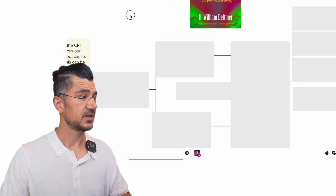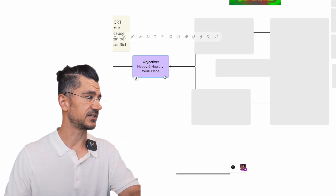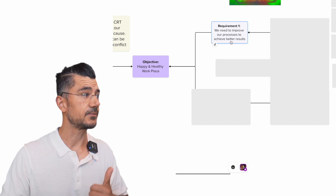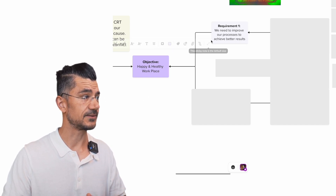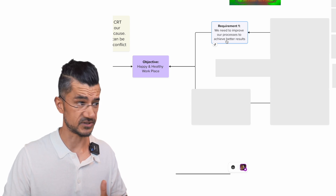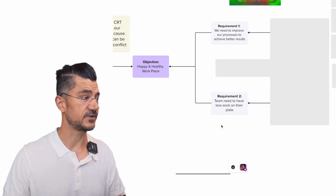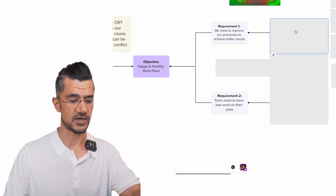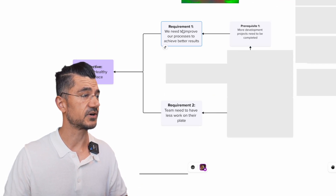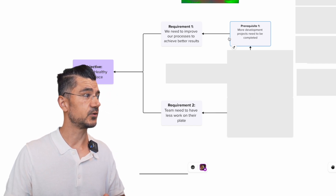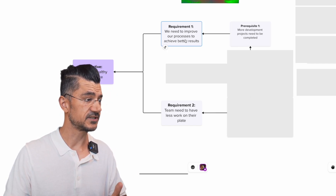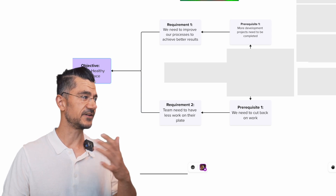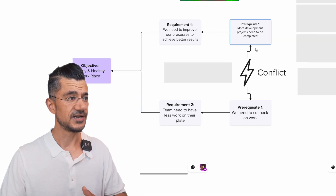Now we're going to translate this into an evaporating cloud. As step one, you create a cloud that looks like this: you have your objective — in our case, a happy and healthy workplace — and then you have your requirement needed for that objective, for example, we need to improve our process to achieve better results. On the other hand, you also have another requirement: the team needs to have less work on their plate. The prerequisite for the first is that more development projects need to be completed; the prerequisite for the second is that we need to cut back on work. So within there, there is a conflict.